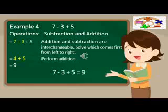For example four, simplify 7 minus 3 plus 5. The operations involved in this example are subtraction and addition. Addition and subtraction are interchangeable. Solve which comes first from left to right. Subtraction comes first.